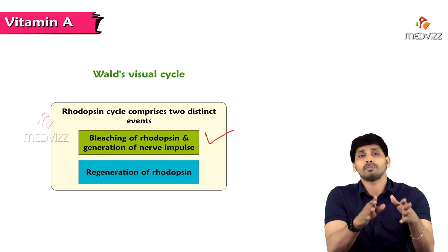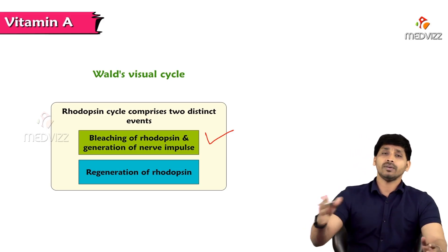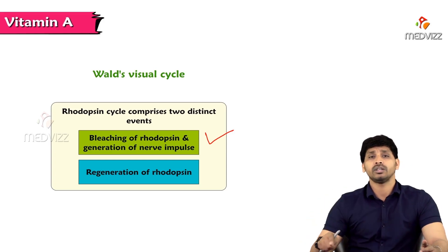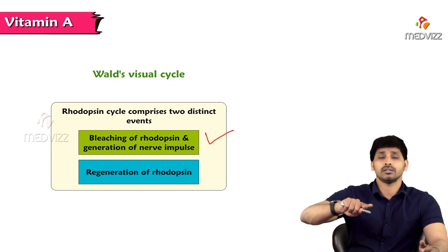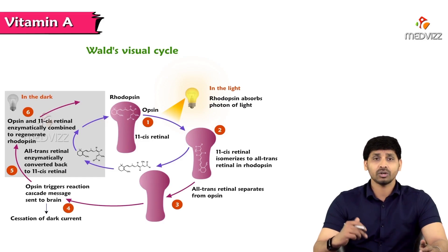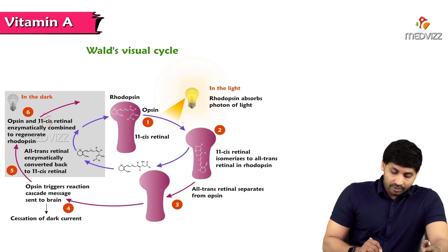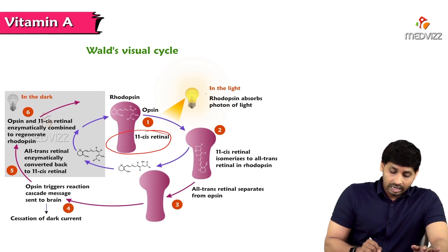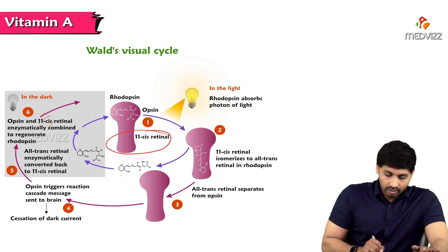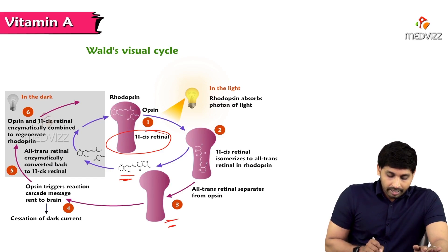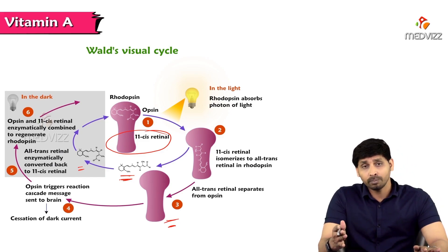Bleaching is the degradation of rhodopsin into opsin and all-trans retinal. The all-trans retinal must then be regenerated back to 11-cis retinal and combine with opsin to form rhodopsin again, preparing it for the next visual cycle. When light falls on rhodopsin, it splits — this is visible in the diagram showing the cycle.